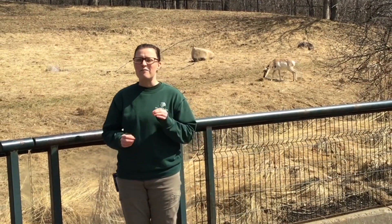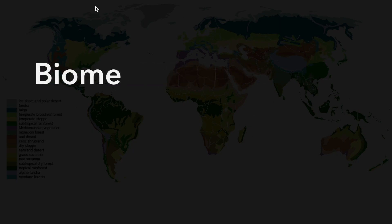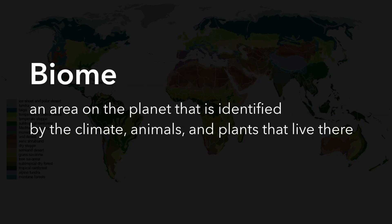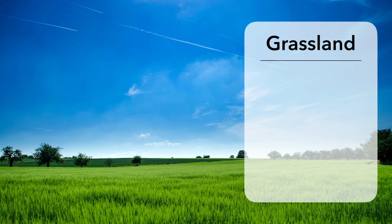But before we get started, there are a few important words that we need to learn. The first word we're going to discuss is biome. Biome is an area on the planet that is identified by the climate, animals, and plants that live there. And while we're going to have seven biomes within this lesson, we're going to focus on one in particular, and that's the grassland biome.